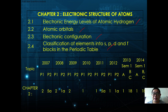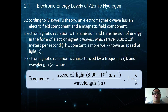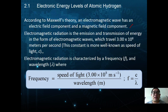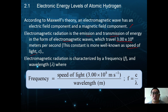According to Maxwell's theory, an electromagnetic wave has an electrical field component and a magnetic field component. Electromagnetic radiation is the emission and transmission of energy in the form of electromagnetic waves, which travel at 3.0 × 10⁸ meters per second — also known as the speed of light. Electromagnetic radiation is characterized by frequency and wavelength, where frequency f equals the speed of light c divided by wavelength lambda: f = c/λ.